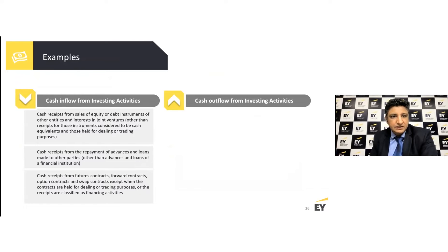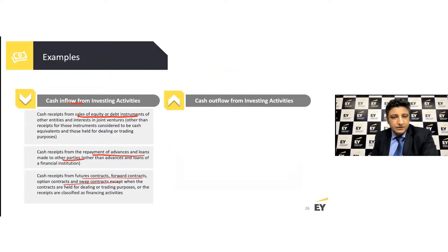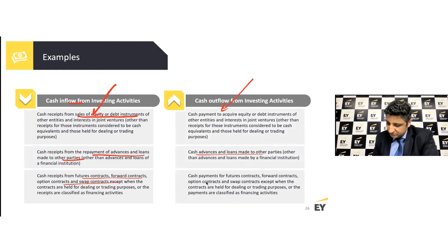Further investing activity examples: if you sell investments in other businesses, those are investing inflows. Repayments of advances or loans to other parties can also be investing inflows. There may also be forward or futures contracts from a long-term perspective, excluding trading or speculation. On the outflow side, you have acquisition of equity or debt, cash advances or loans made, and payments for futures contracts — all part of investing activities.